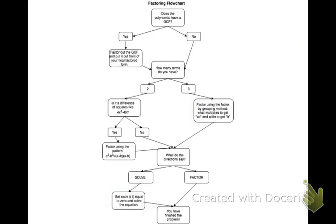Finally, look at this factoring flowchart. Factoring is a flowing process. You can use this flowchart during practice in Math Excel and even as you take the quiz and unit test. Ask yourself: Do I have a greatest common factor? How many terms do I have? If 2 terms, is it a difference of squares? If 3 terms, can I factor it using trinomial factoring? And finally, what do my directions say — am I solving or just factoring? This concludes the notes on factoring and solving trinomials.